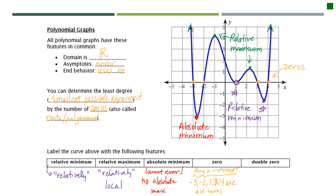Now the double zero — this is what happens at the point where the graph bottoms out and bounces off the x-axis. It can happen where the graph goes down and then back up, or under the x-axis where it goes up and bounces back down. Wherever your graph just touches the x-axis, that's called a double zero — it bounces on the x-axis. In this particular problem, it's x equals one, meaning that particular answer actually occurs twice.